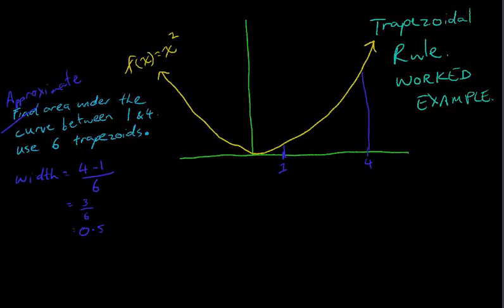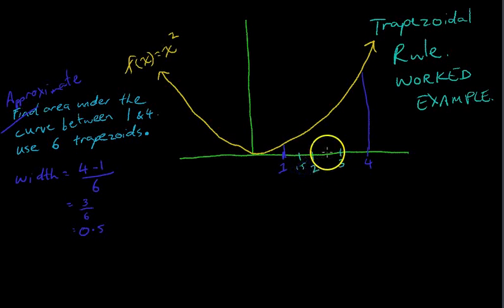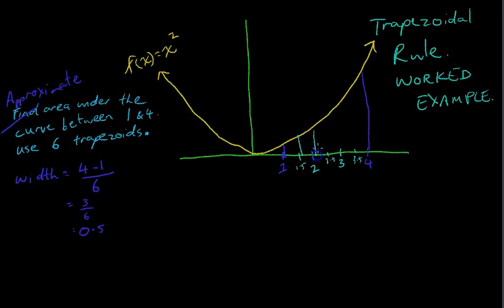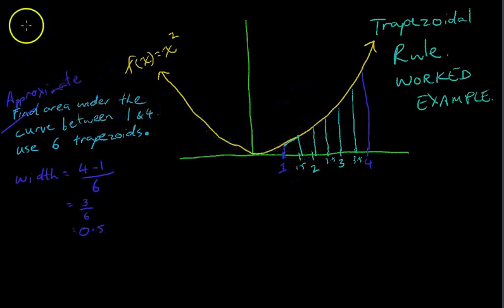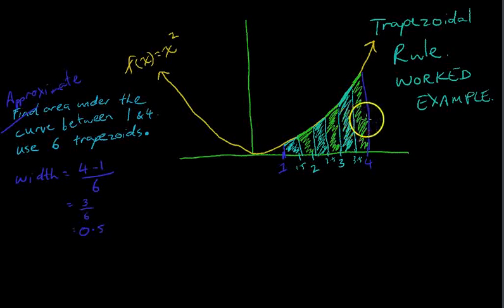I'm just going to draw those trapezoids in now. The x-values we'll mark are 1.5, 2, 2.5, 3, and 3.5. If there are going to be 6 trapezoids each with a width of 0.5, we get trapezoid 1, 2, 3, 4, 5, 6 — and each one of those gets linked up to make a trapezoid. So you can see we've got 6 trapezoids here, each with a width of 0.5.